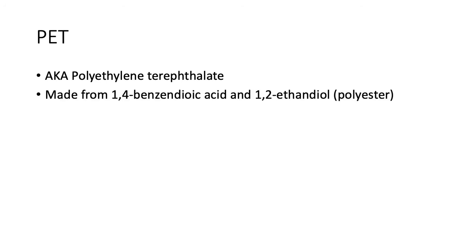PET — polyethylene terephthalate — is one of the main plastics used in daily life. It's made from 1,4-benzendioic acid and 1,2-ethanediol. The 1,4-benzendioic acid has a benzene ring with carboxylic acid groups at positions one and four — on opposite ends of the benzene ring — which means there's a benzene ring in the chain. The 1,2-ethanediol is a diol, making this a polyester.